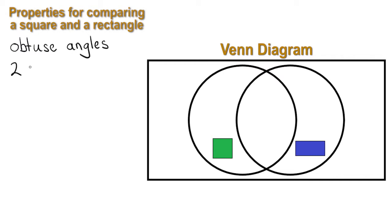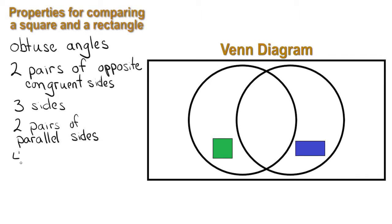Obtuse angles, two pairs of opposite congruent sides, three sides, two pairs of parallel sides, four right angles, four sides, and four congruent sides.